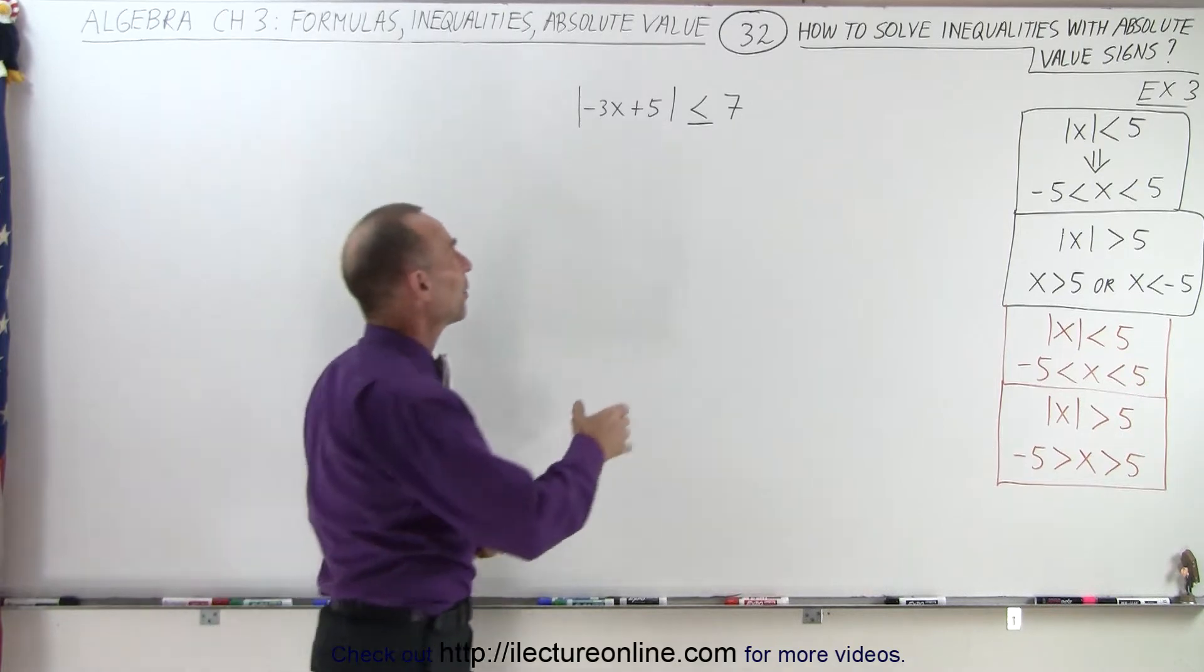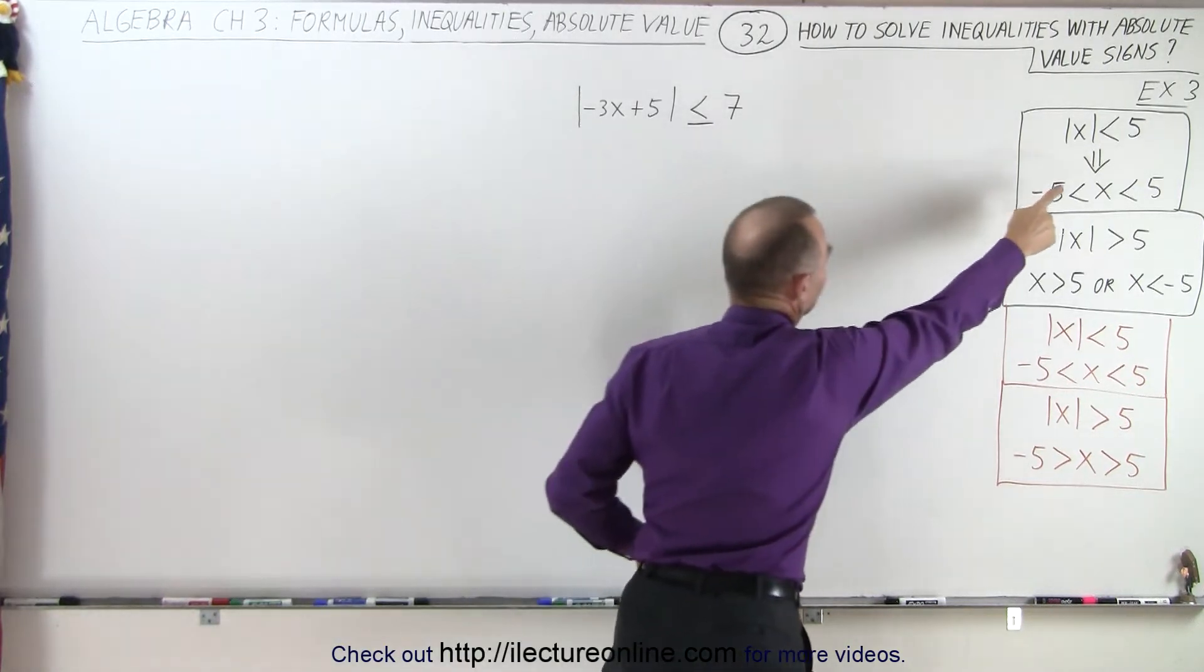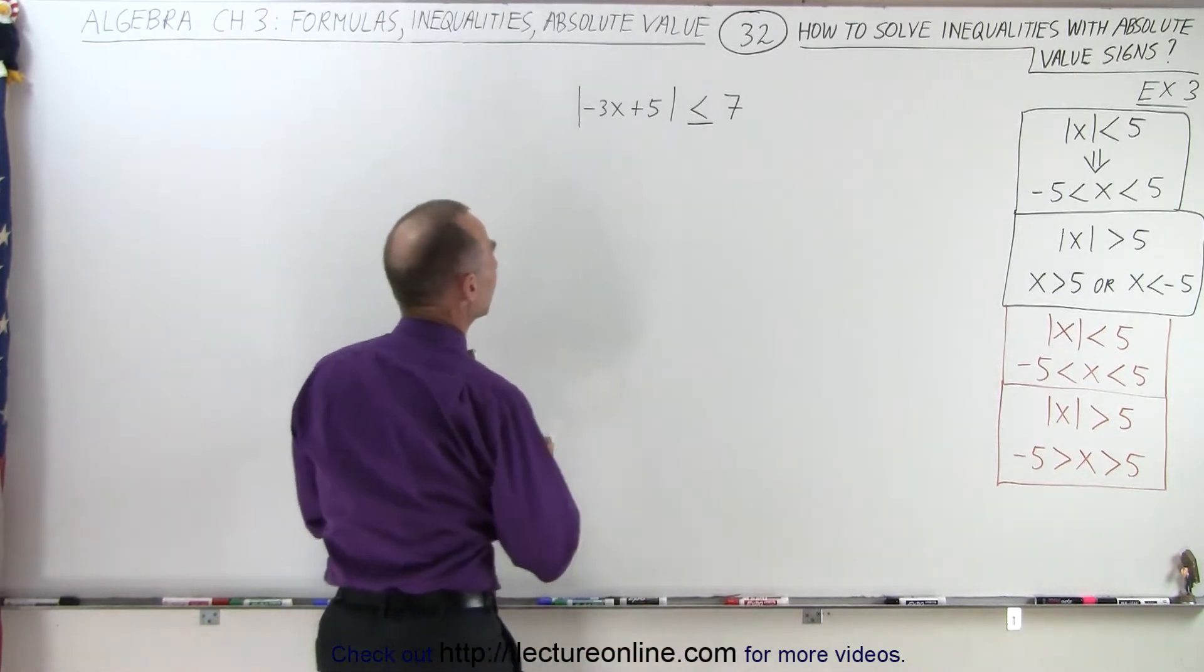First of all, we realize that we have the absolute value of something less than or equal to 7, which is like case number 1, and so we know that we can write it as follows.